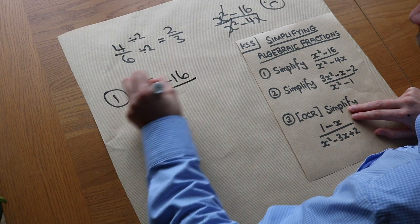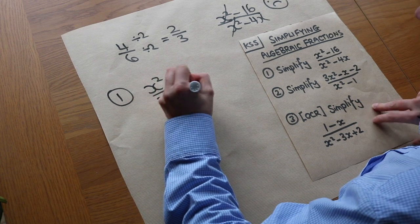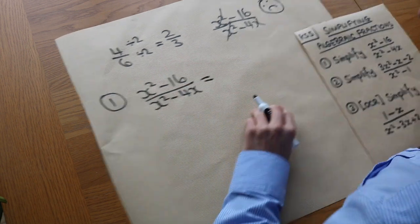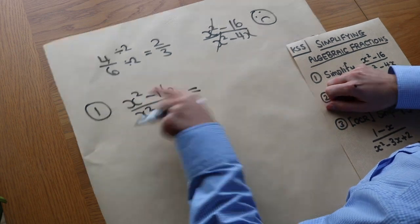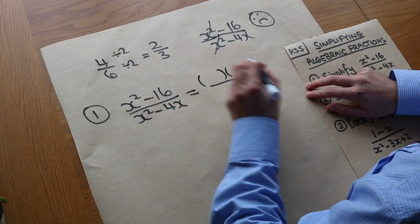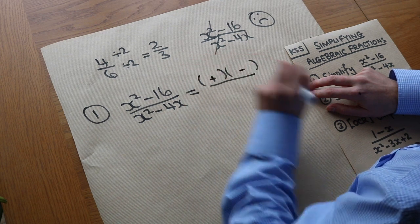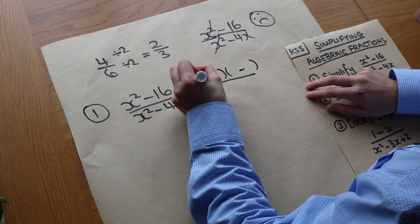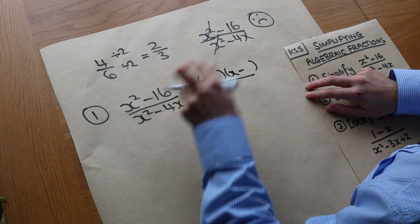x squared minus 16 over x squared minus 4x. Let's factorise the top and bottom, the numerator and denominator. Well that's the difference of two squares, so it's two brackets. Remember the difference of two squares. One has a plus in the middle, one minus. The square of x squared is x, and the square of 16 is 4.